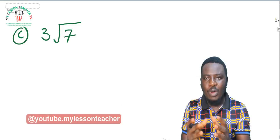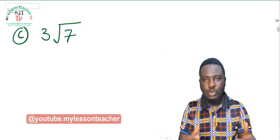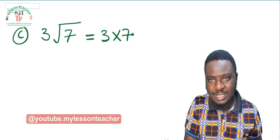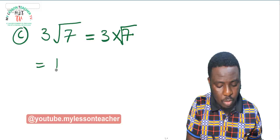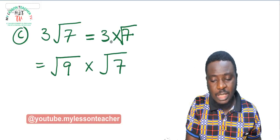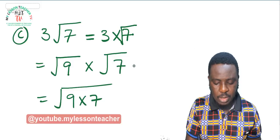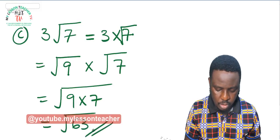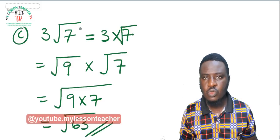I encourage you to try to predict the next step as I go. Example C: 3 root 7 can be expressed as 3 times root 7. Squaring 3 gives 9, so this becomes root 9 times root 7. By the laws of surds, this is root of 9 times 7. And 9 times 7 is 63, so this becomes root 63. I have expressed 3 root 7 in its single surd form as root 63.